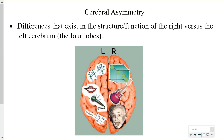On the left side we can see some symbols representing language, speech, vocabulary, and math. On the right side of the brain, we see a geometric figure, a musical instrument, and a face — that's the kind of information that is processed on the right side of the brain.